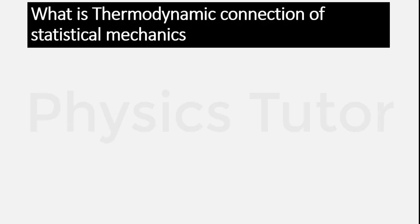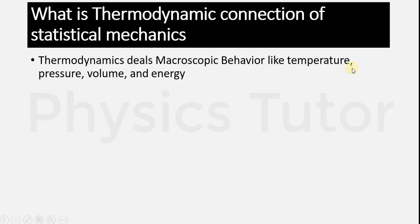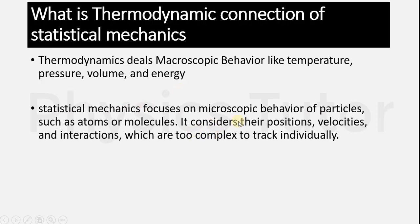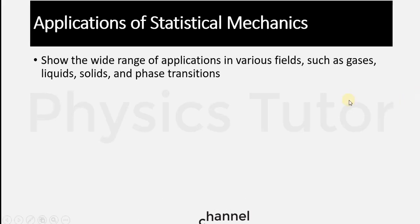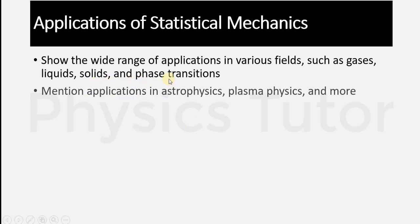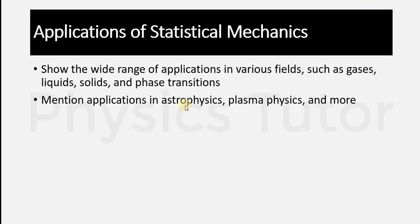To study disorderedness, we should know about the thermodynamic connection with statistical mechanics. Thermodynamics deals with macroscopic behavior like temperature, pressure, volume, and energy, while statistical mechanics focuses on microscopic behavior of particles such as atoms or molecules — their positions, velocities, and interactions. Applications of statistical mechanics include a wide range: gases, liquids, solids, phase transitions, astrophysics, plasma physics, and many more branches.